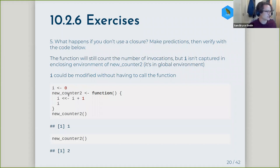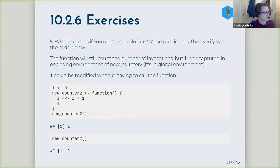This is the example code where i is assigned a value outside of the function, and this function new_counter_2 will update the value of the variable i that exists in the parent environment of the function. This is the problem with lazy evaluation again — it will still count the number of times you've called the function, but i exists in the global environment, not inside the enclosed environment of this function. So i could still be modified externally and calling the function will mess with the counter.